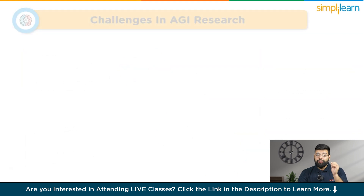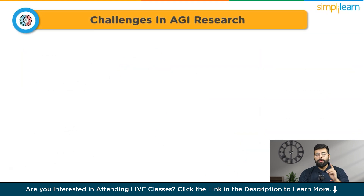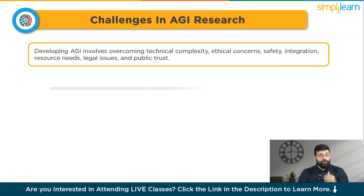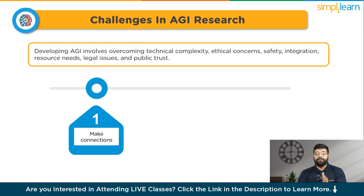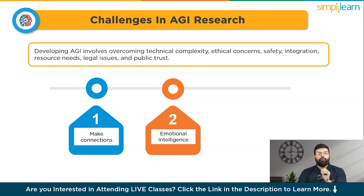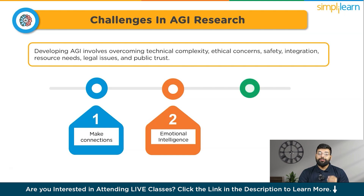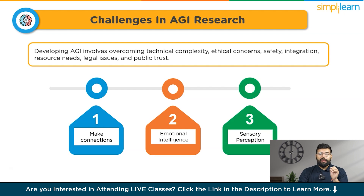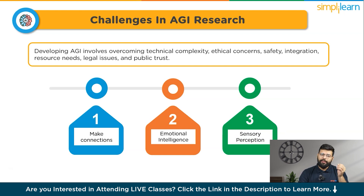There are also significant challenges in AGI research. The first challenge is making connections — current AI models are domain-specific and can't apply knowledge across domains, unlike humans who adapt knowledge to various contexts. Then comes emotional intelligence: human creativity and emotional responses are challenging to replicate with neural networks, which generate outputs based on trained data patterns. Finally, sensory perception requires advanced technology to perceive the world accurately, differentiating shapes, colors, tastes, smells, and sounds like humans.